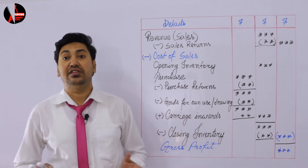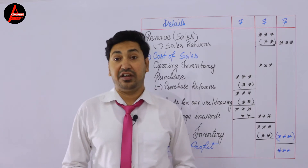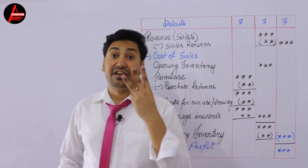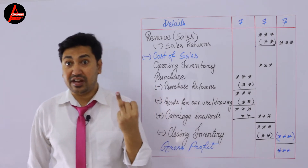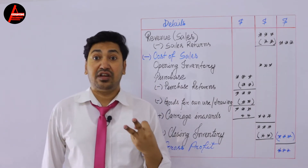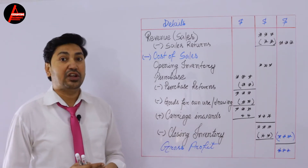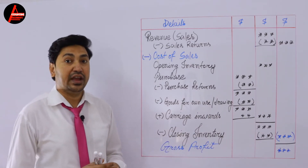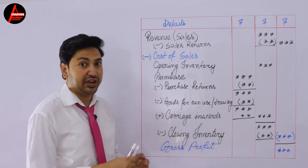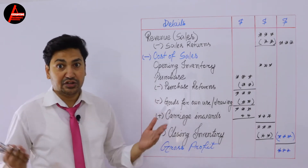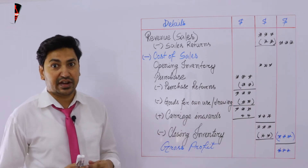What is included in the financial statement? There are so many items in the trial balance, and there are three parts of a financial statement: trading account, profit and loss account, and balance sheet. Today I'll show you what to write in the first section of an income statement, which is the trading account. Hello students, I'm Ashikul Ahman — welcome back to my channel. Let's get started.